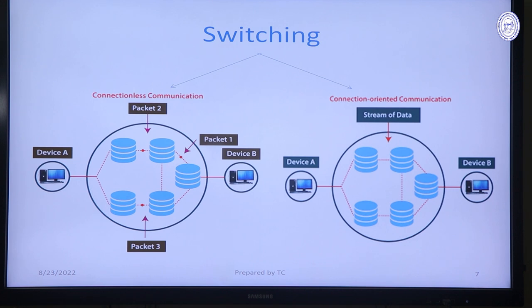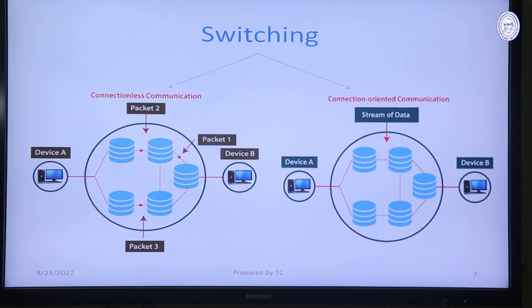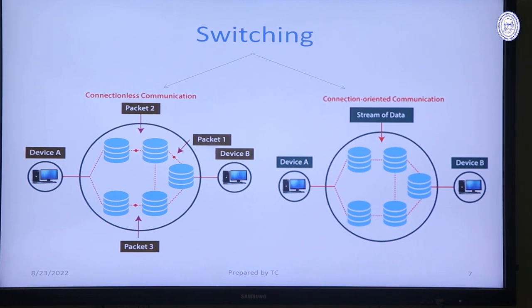When we use connectionless communication, the user creates data and can send it via any switches — there is no need for a pre-handshaking method, so data does not follow any particular route. But when we use connection-oriented communication, first the sender creates a route between the sender and the receiver, and then all data must follow the same route. This type of communication is called connection-oriented communication.